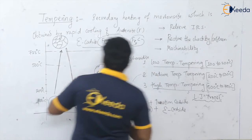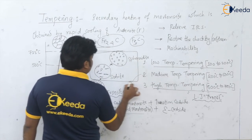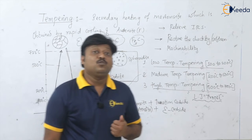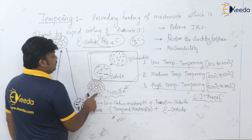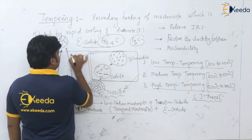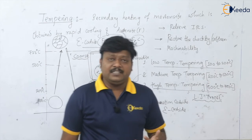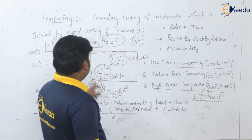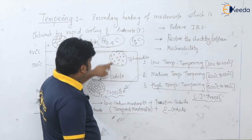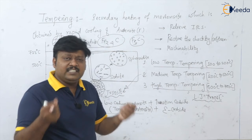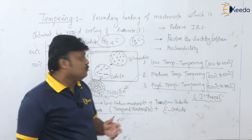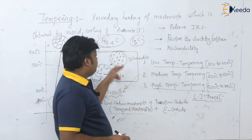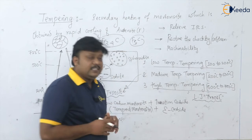From 500 degrees centigrade to 700 degrees centigrade — just below the lower critical temperature — the cementite particles become coarser. The cementite which was fine in troostite now becomes coarse. When we resolve these particles under the optical microscope, we can see they are spheroidal in shape. That is the reason this microstructure — with coarse cementite that appears spheroidal under the optical microscope — is named spheroidite.